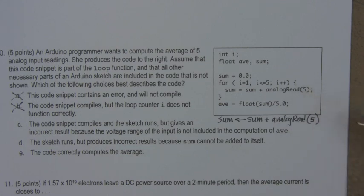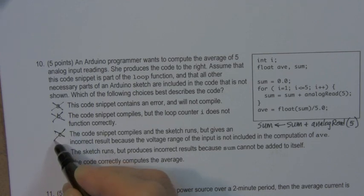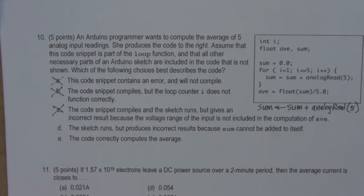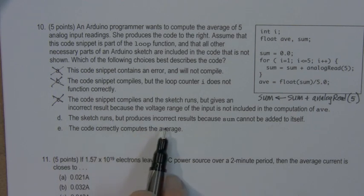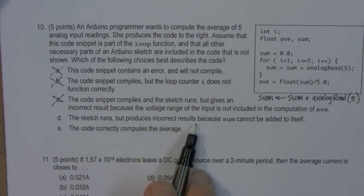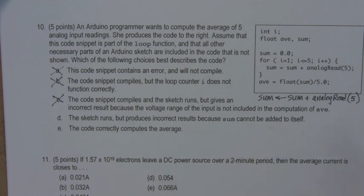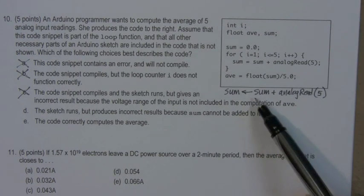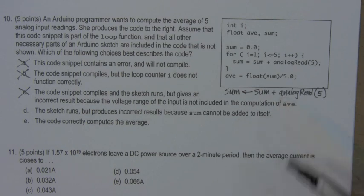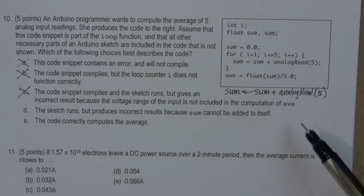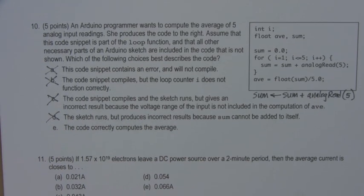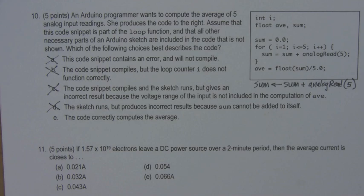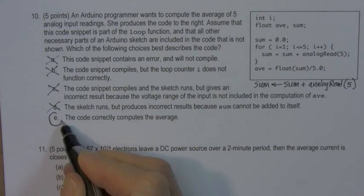There's no way to specify the voltage range. So this is a completely bogus choice. The sketch runs, but produces incorrect results because sum cannot be added to itself. Well, that's not true. This statement, we discussed this syntax here that sum is just replaced by the previous value of sum plus analog read. So that's not correct. And in this case, we've crossed out a series of not correct answers. The only one left is the code correctly computes the average, which in fact is true.